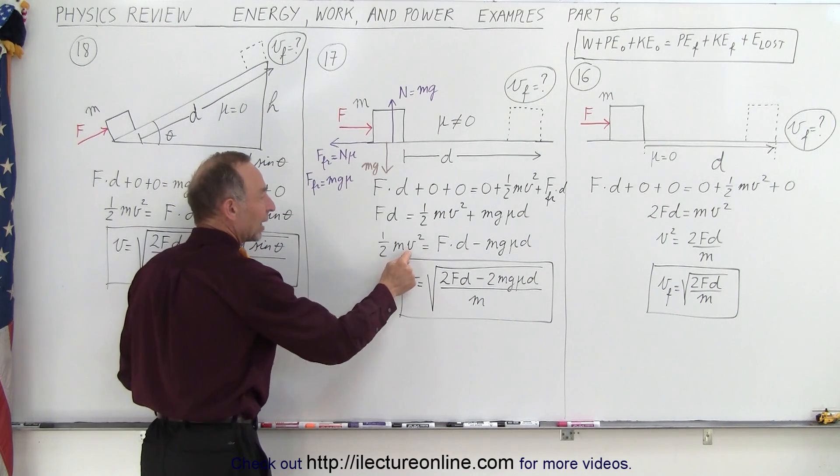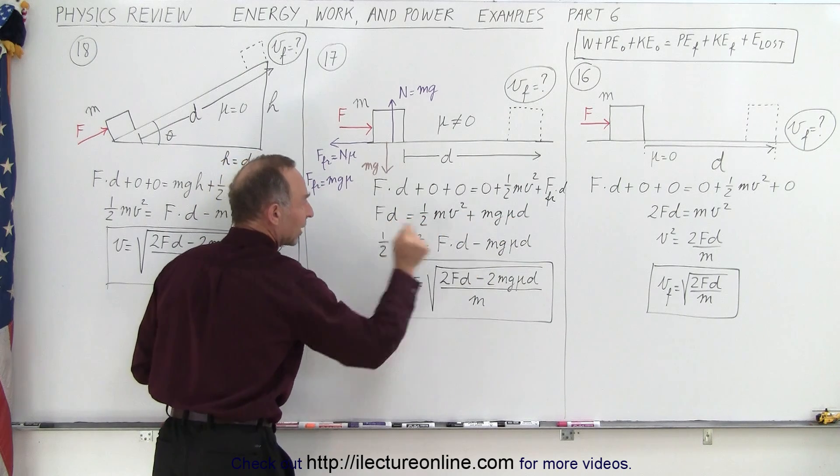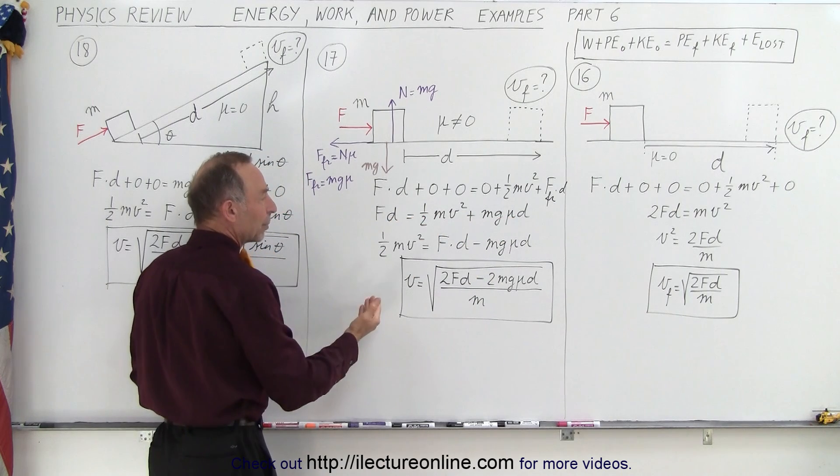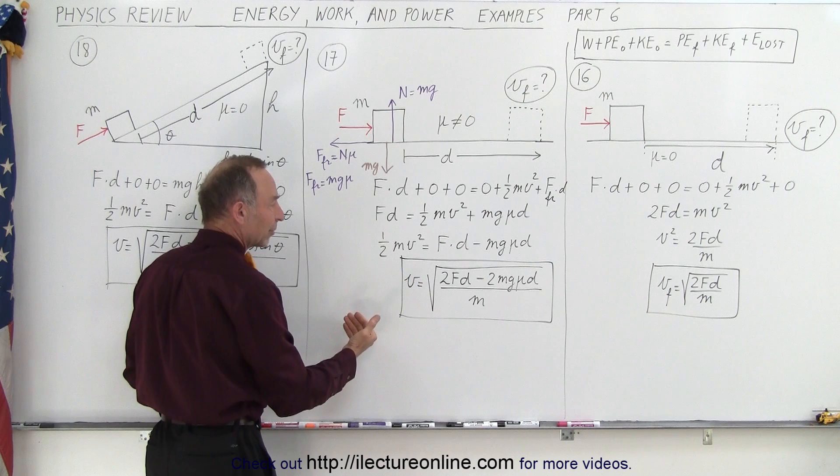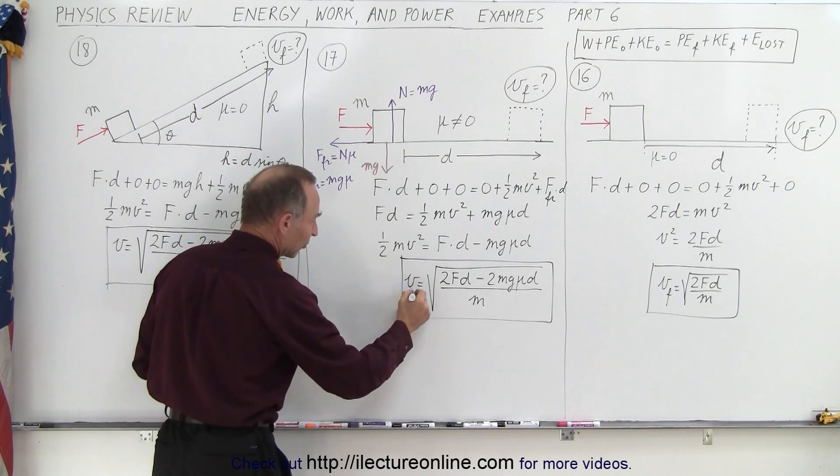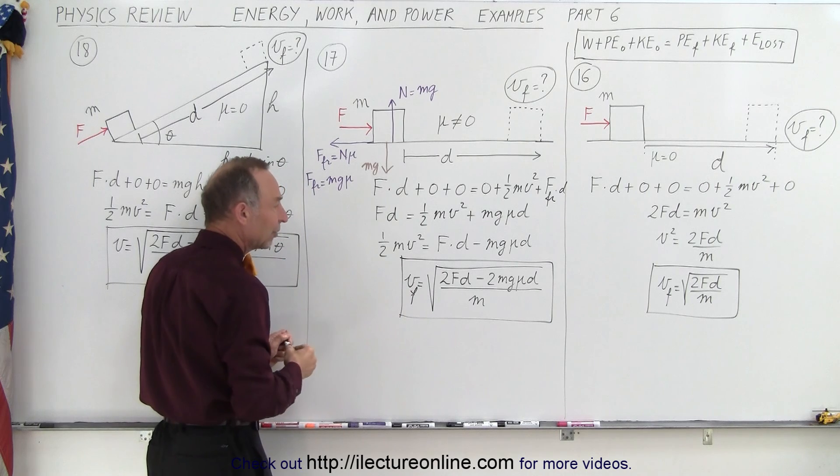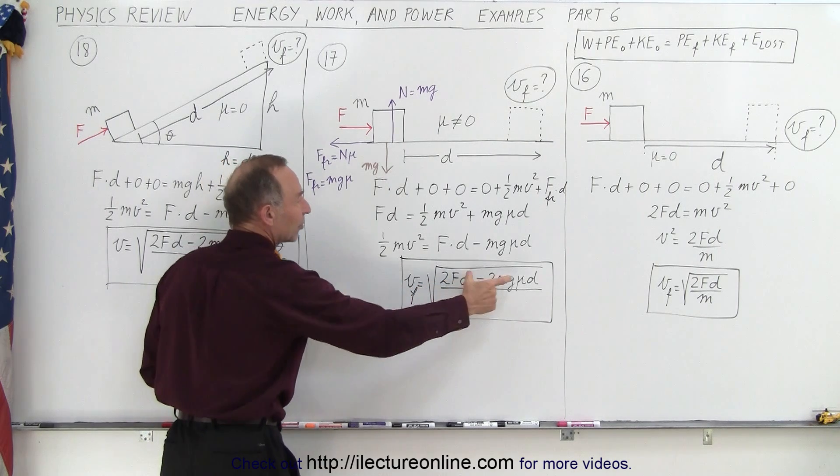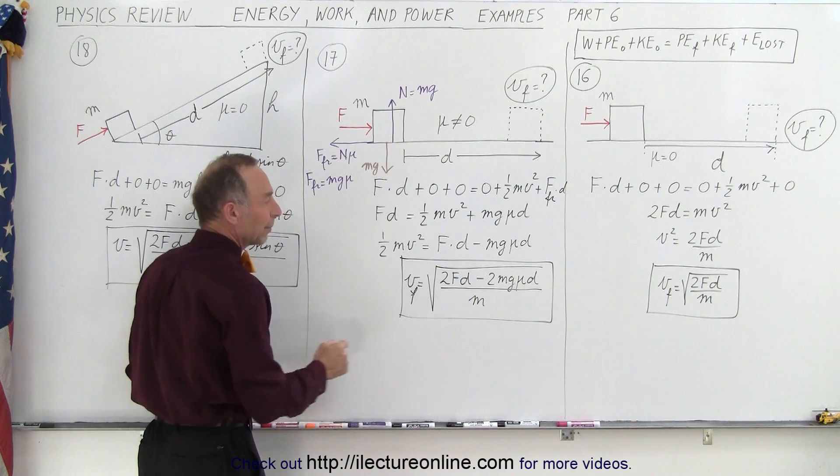So now we solve for one half mv squared. We take this and move to the other side; it becomes negative. Then we multiply both sides by 2, divide both sides by m, take the square root, and you have the final velocity—I guess we could put sub f there, final velocity—is going to be equal to 2Fd minus this term right here, 2mg mu times d, over m.